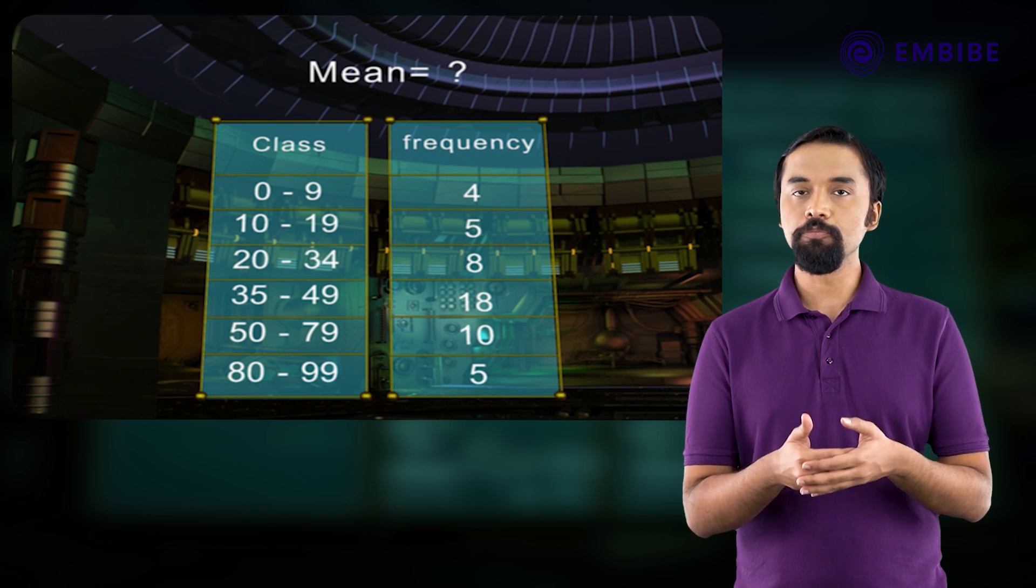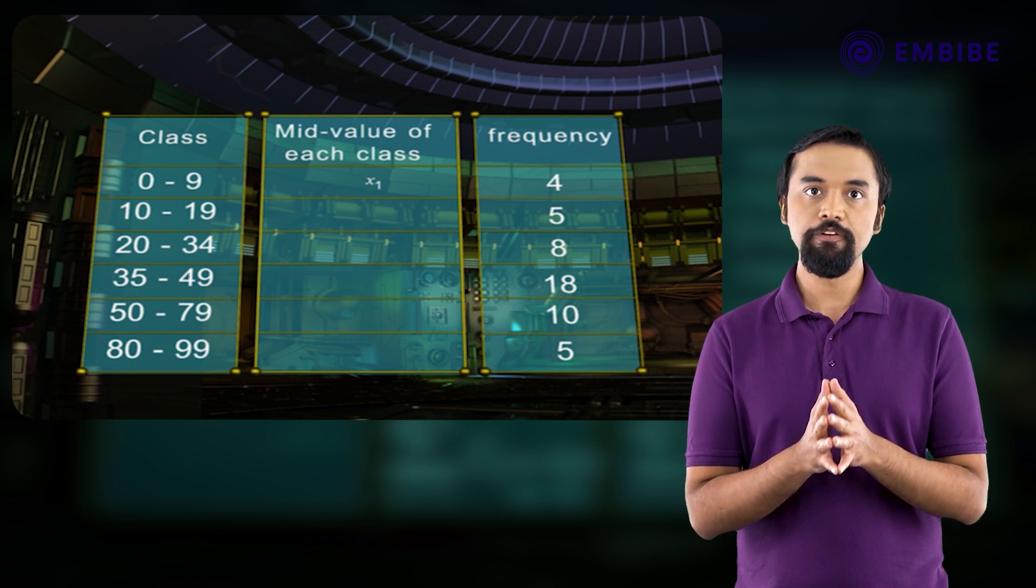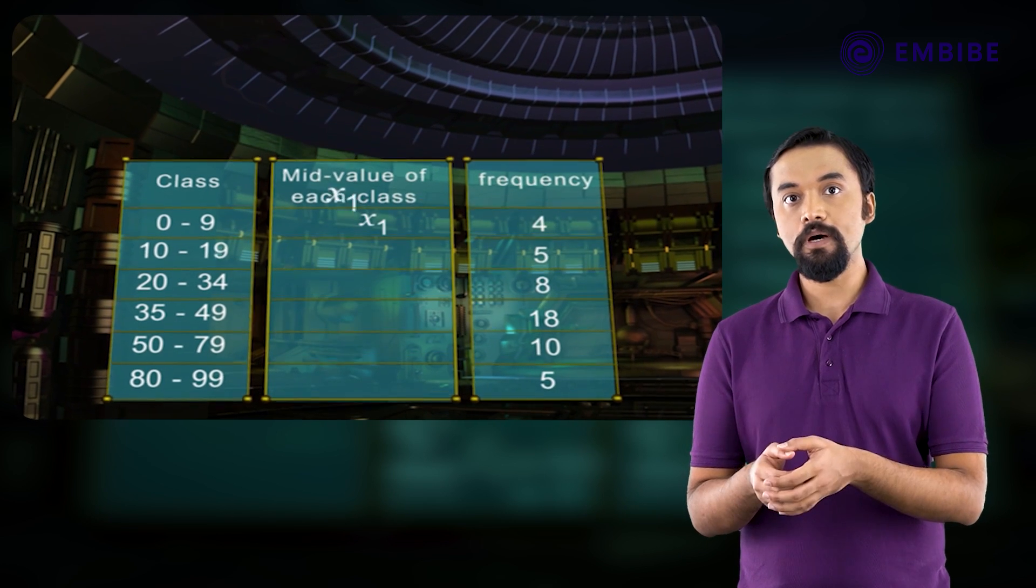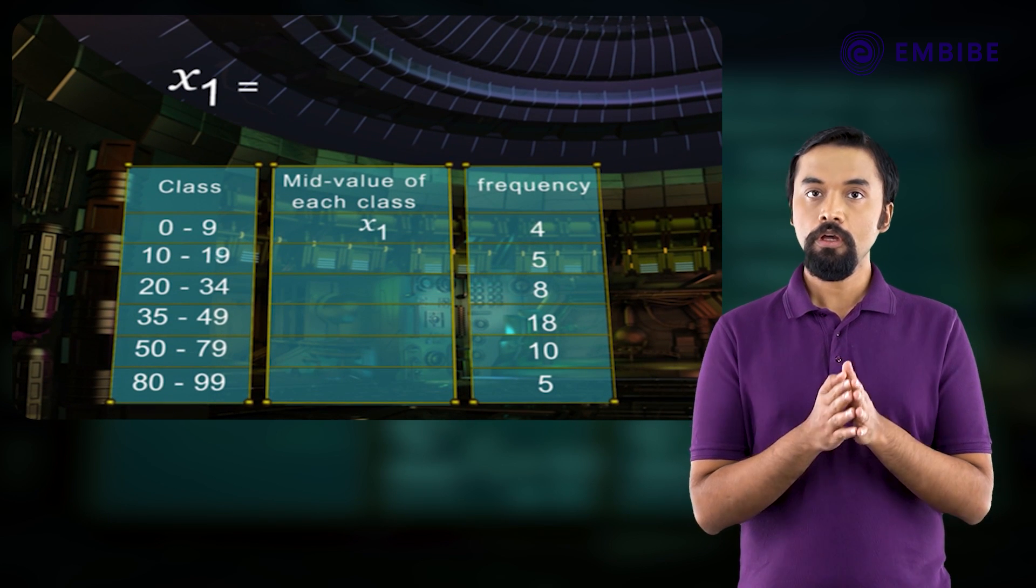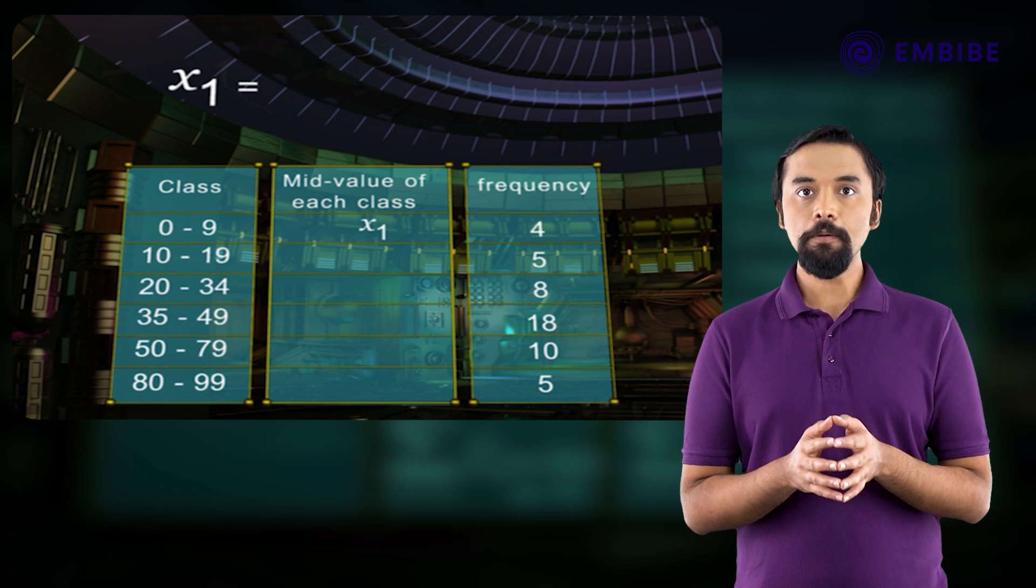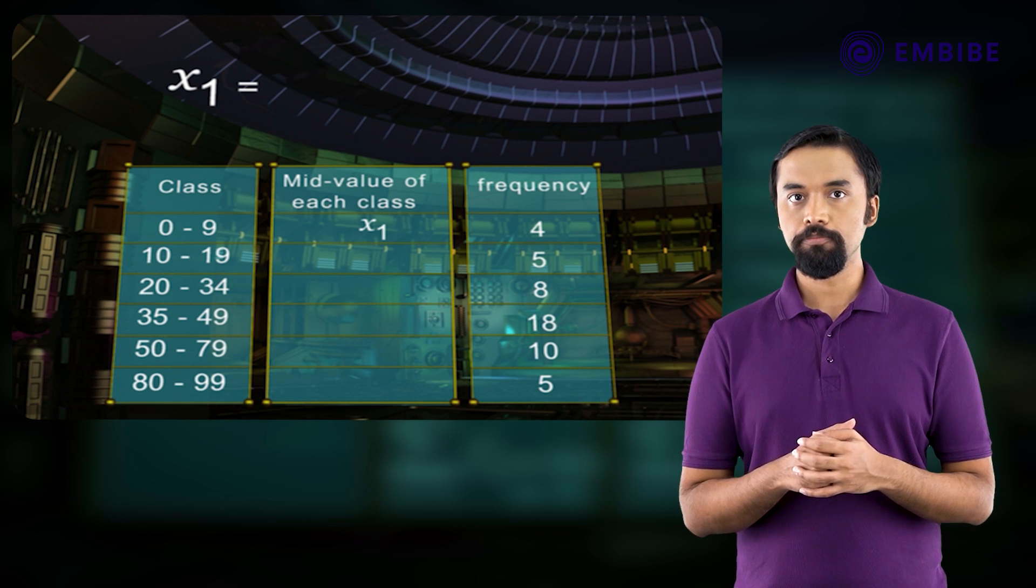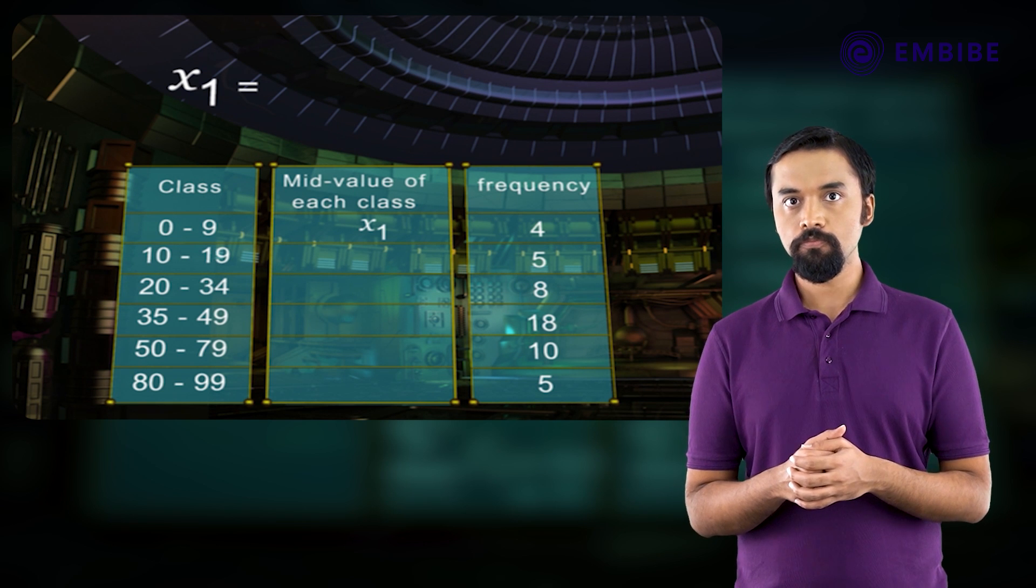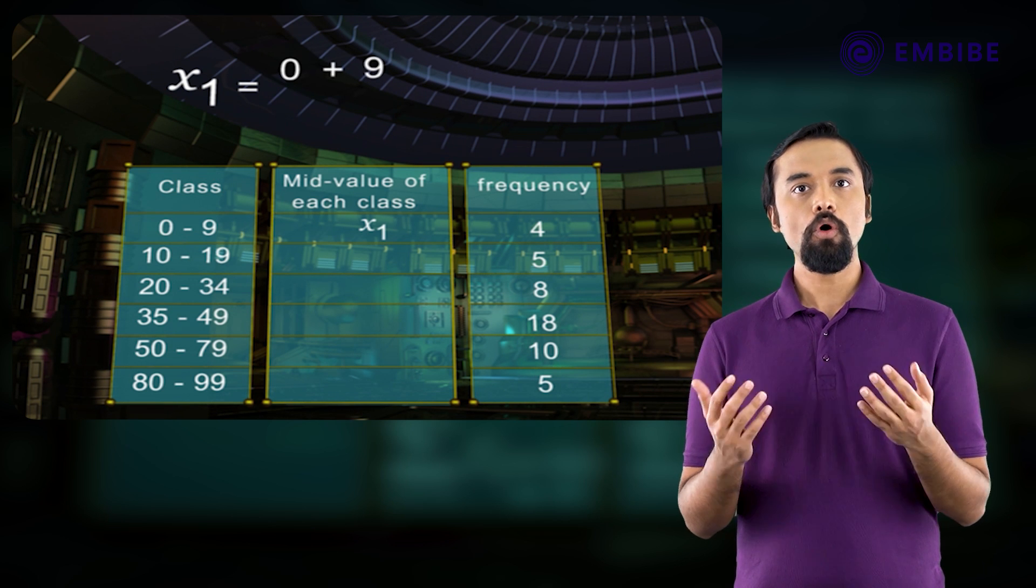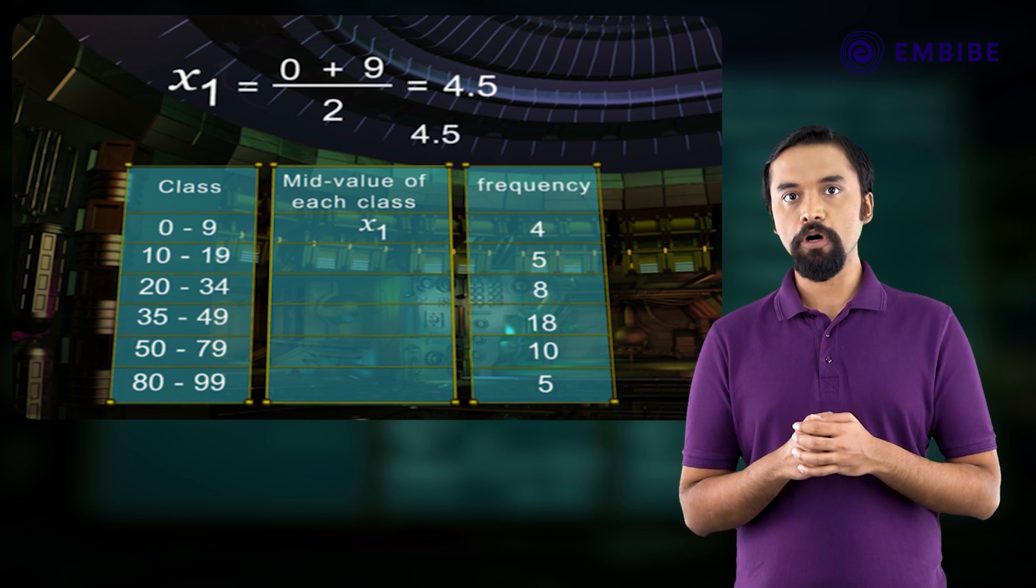If X₁ is the mid-value of the first class, X₁ is equal to lower limit of the first class plus upper limit of the first class, the whole upon 2. X₁ is equal to 0 plus 9, the whole upon 2, is equal to 4.5.